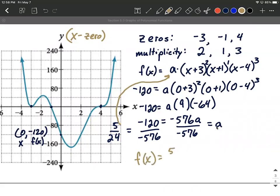...5/24 multiplied by (x + 3)^2 times (x + 1)^1 times (x - 4)^3. And there we have our polynomial function in factored form that would produce this graph over here on the left hand side.